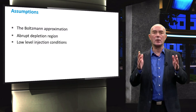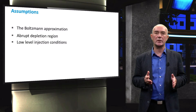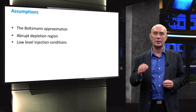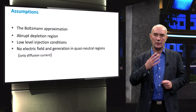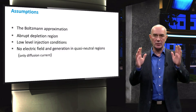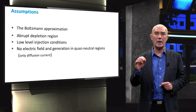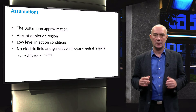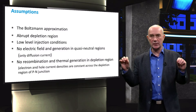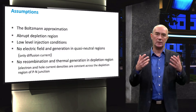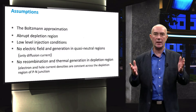Thirdly, we assume a low charge carrier injection condition, meaning the concentration of majority carriers in the quasi-neutral region does not change significantly under applied bias voltage. The fourth assumption is that there is no electric field and no generation of mobile charge carriers in the quasi-neutral regions. The fifth assumption is that the individual electron and hole currents are constant across the depletion region, implying no recombination and no thermal generation of carriers in the depletion region.